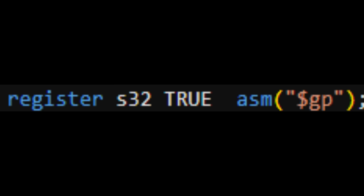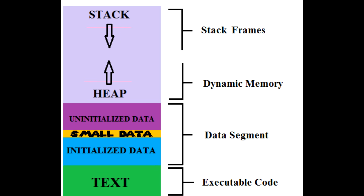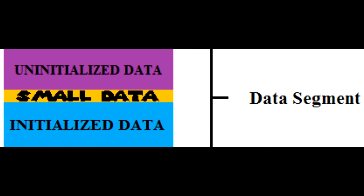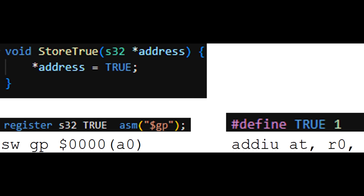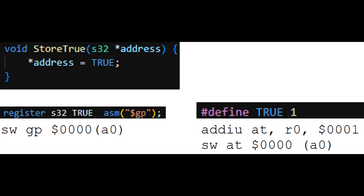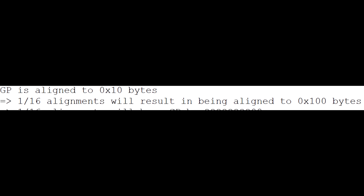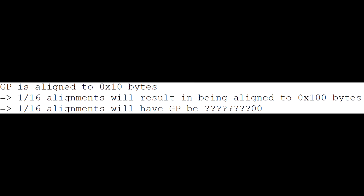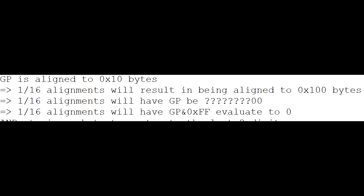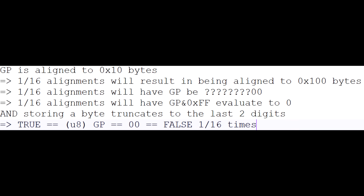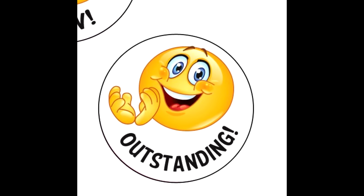What the heck is this? We bound the value of true to a register instead of a value, and this register is GP. Since the memory address of our S data stays the same, the GP register will always be the same non-zero value. By using the GP register instead of the value 1, we can store true in just one cycle instead of two. There's one caveat: since GP is 16-byte aligned, 1 in 16 compilations will end up aligning the GP register to a 256-byte boundary, causing it to store 0 into byte-sized variables. Your game will simply not work. We've added randomness into whether the game compiles correctly or not.